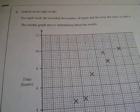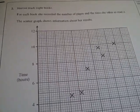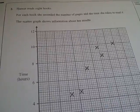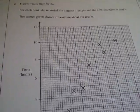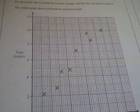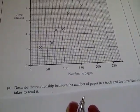Question number two says Harriet reads eight books. For each book she recorded the number of pages and the time she takes to read it. This scatter graph shows the information about her results.